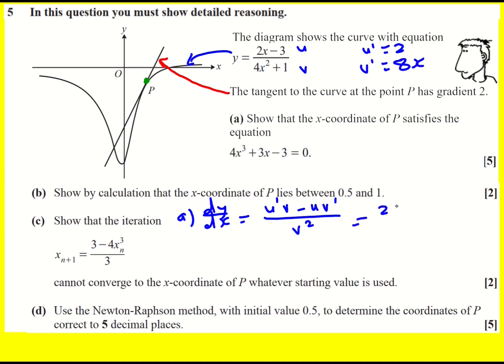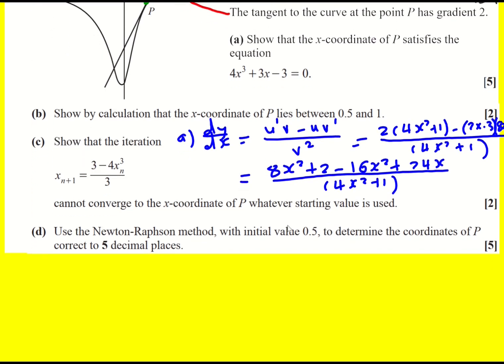So this is my u, this is my v. u dash is going to be 2, and I differentiate the top. v dash is going to be 8x. So 2 times 4x squared plus 1 minus u, which is 2x minus 3 times v dash, which is 8x. All over 4x squared plus 1. Let's just simplify that. So I'm going to get 8x squared plus 2 minus 16x squared, plus 24x over 4x squared plus 1.